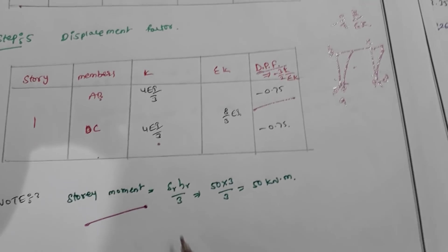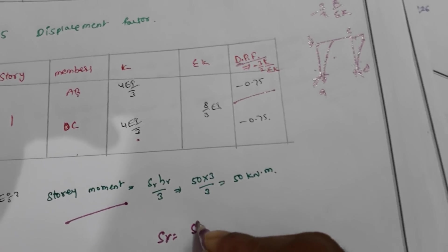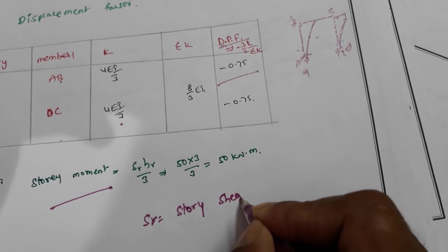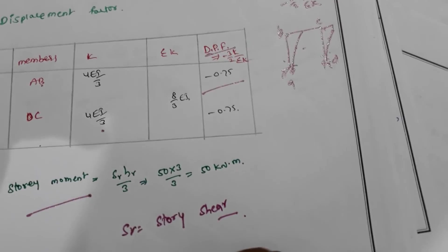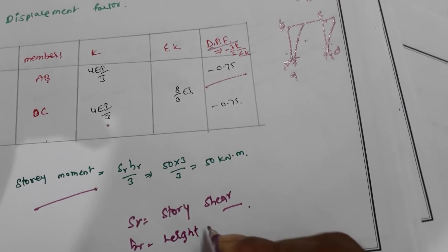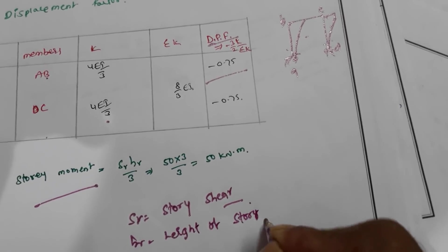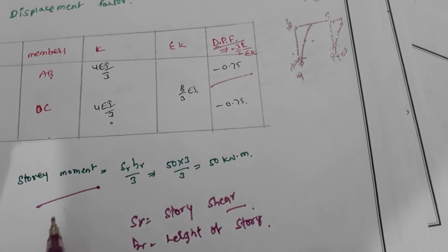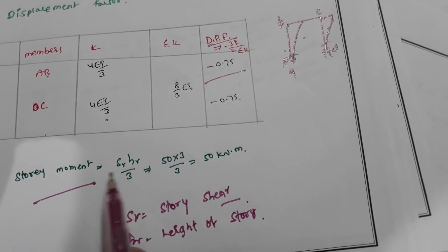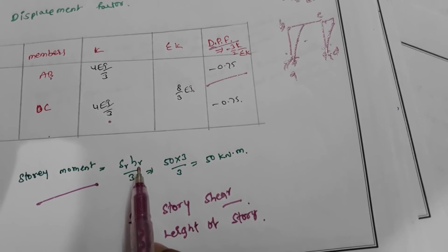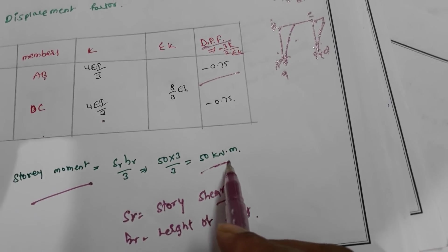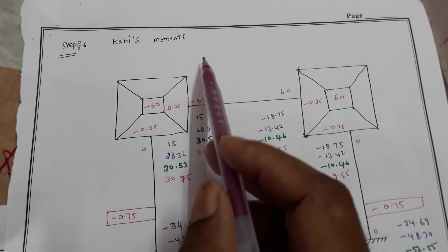Next is the story moment. The story moment S_R equals the story shear multiplied by the height of the story divided by 3, which equals 50 kNm.